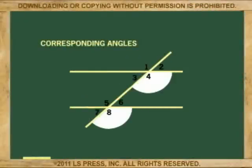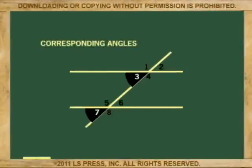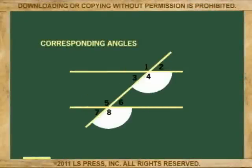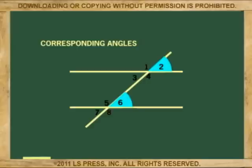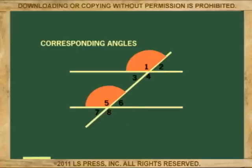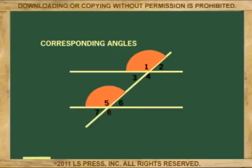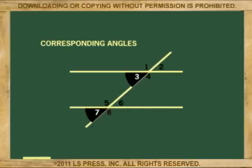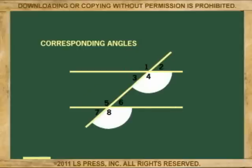To conclude about equal pairs of angles in parallel lines: all pairs of corresponding angles are equal. The pairs of angles 1 and 5, 2 and 6, 3 and 7, and 4 and 8 are equal.